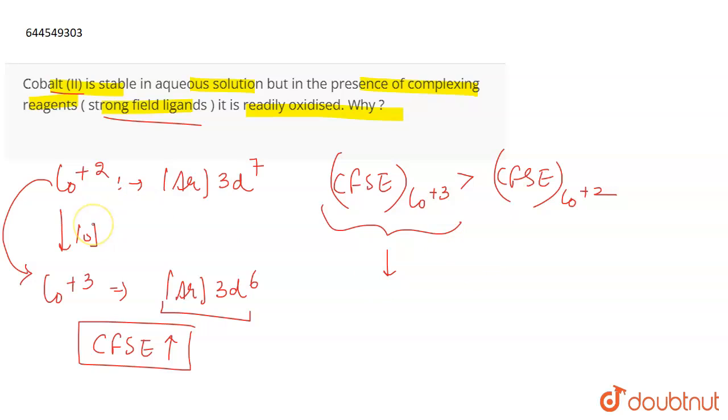Because on oxidation, when Co plus 3 is getting formed, then in the presence of strong field ligand, pairing is taking place due to which the CFSE is going to increase.